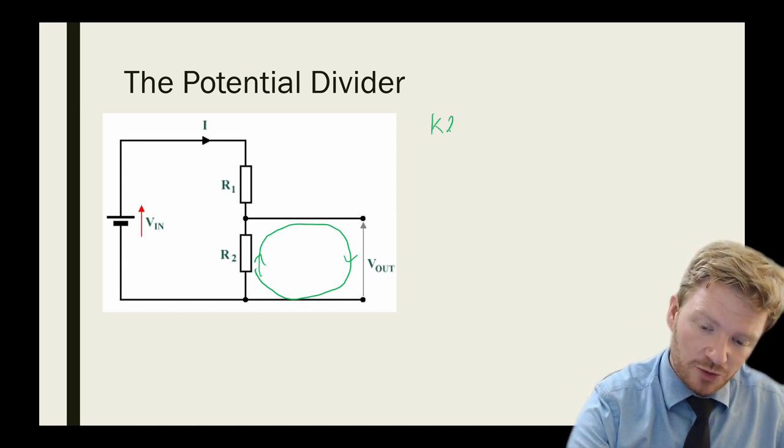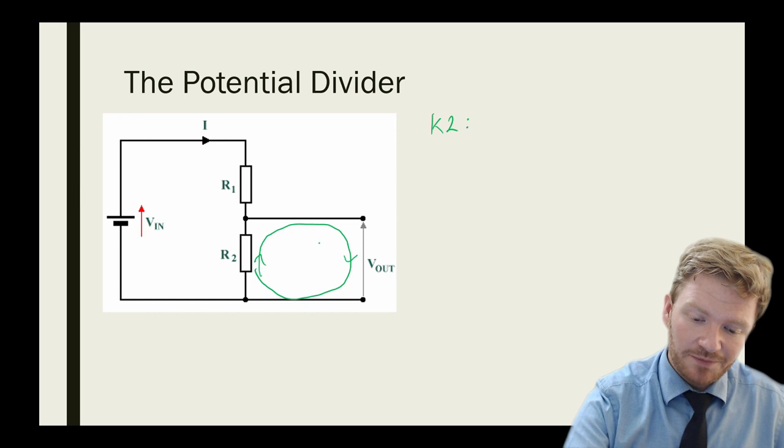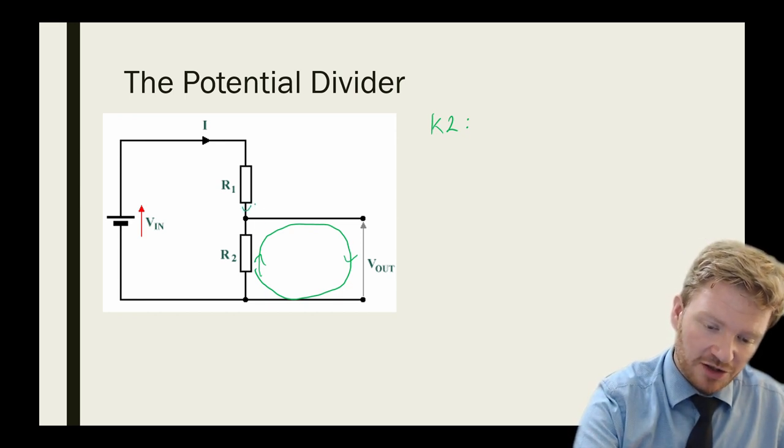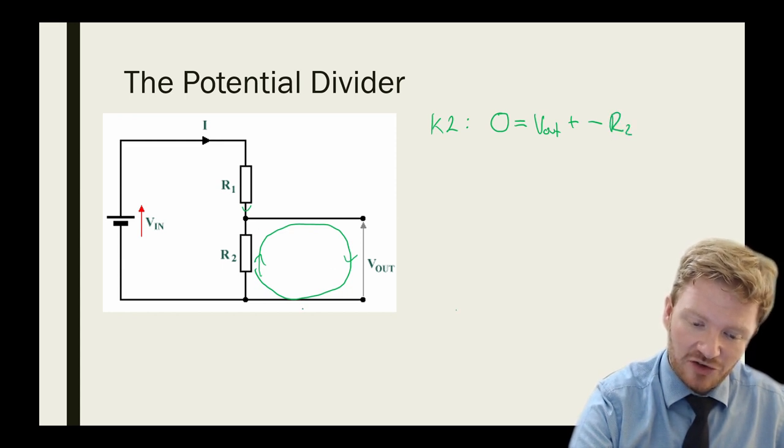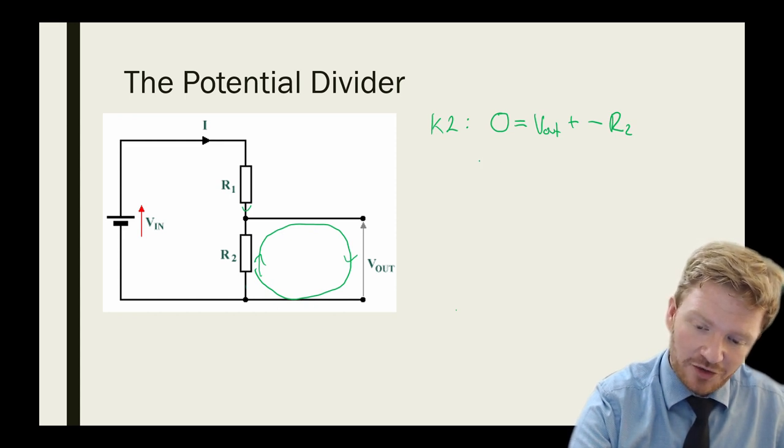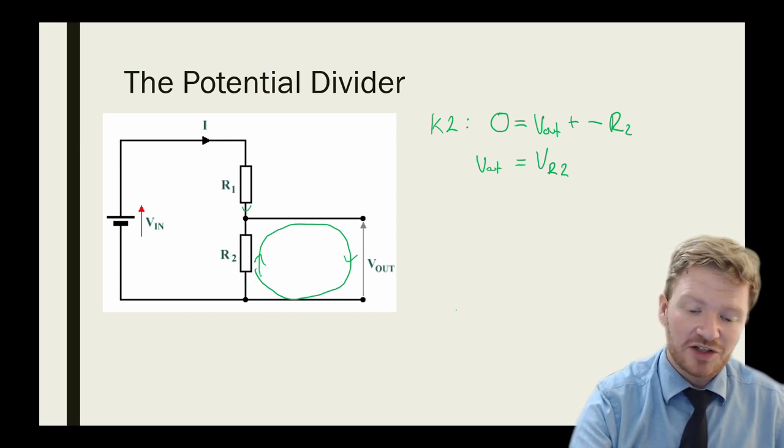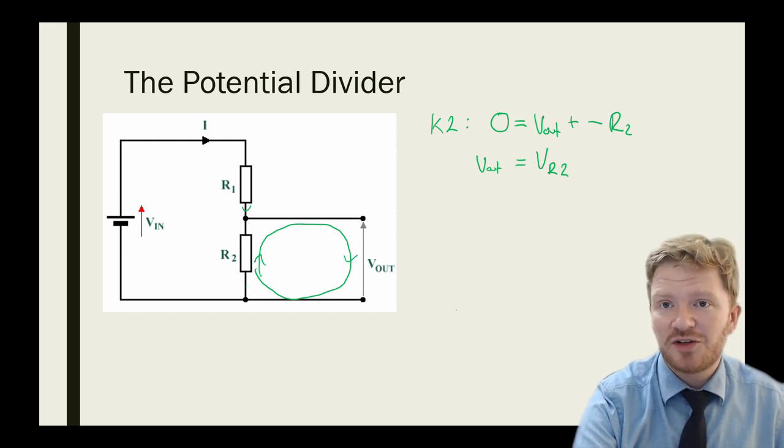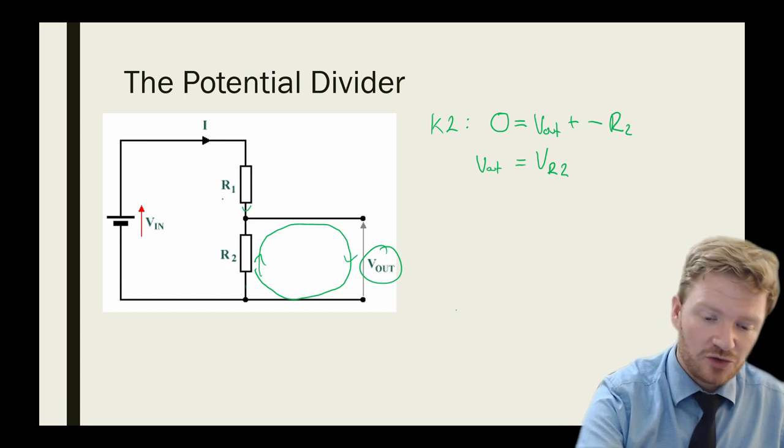If you look at that loop here, I can say, using K2, that the sum of the EMFs around that loop is the sum of the voltages out in that loop. Now the way I drew it, I went against the direction of current, because my current is going down that way. So I can say that zero, which is my EMFs, is equal to V out plus negative R2, because R2 is going against the direction. That loop goes against the direction of R2. In other words, I can say V out is equal to the voltage across resistor 2. By changing these two resistors, by making them different values of resistance, I can actually control V out. So I get a V out that depends on these two resistors, which is pretty cool.